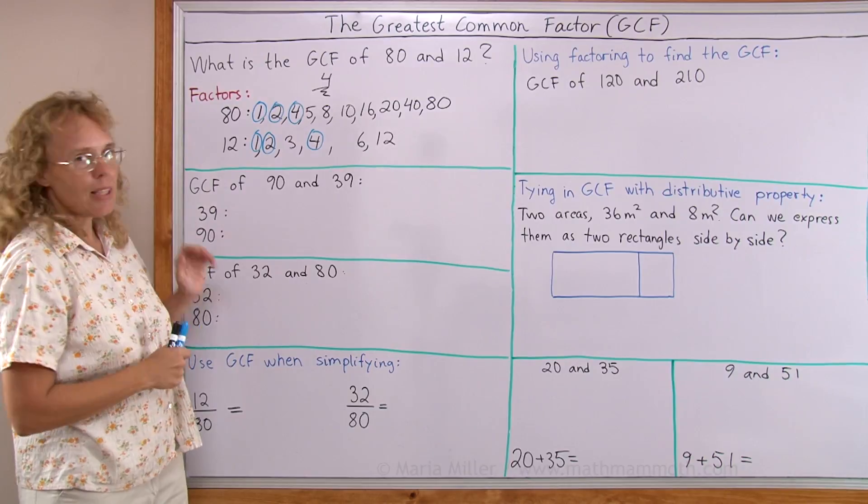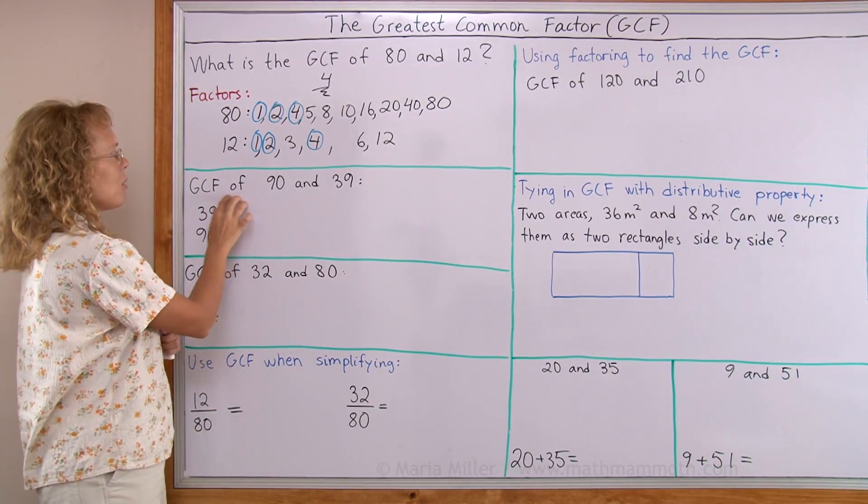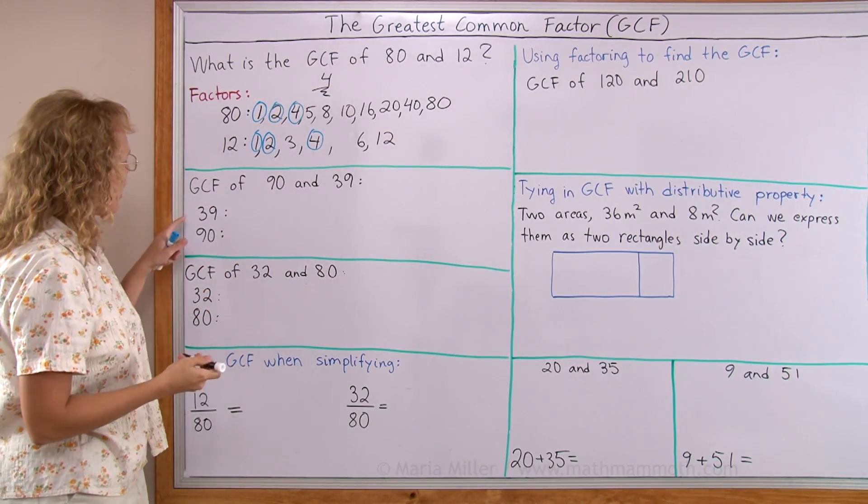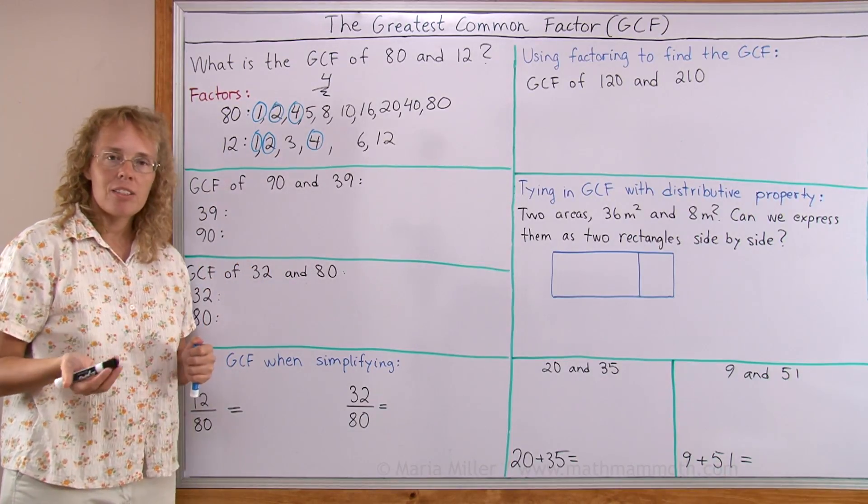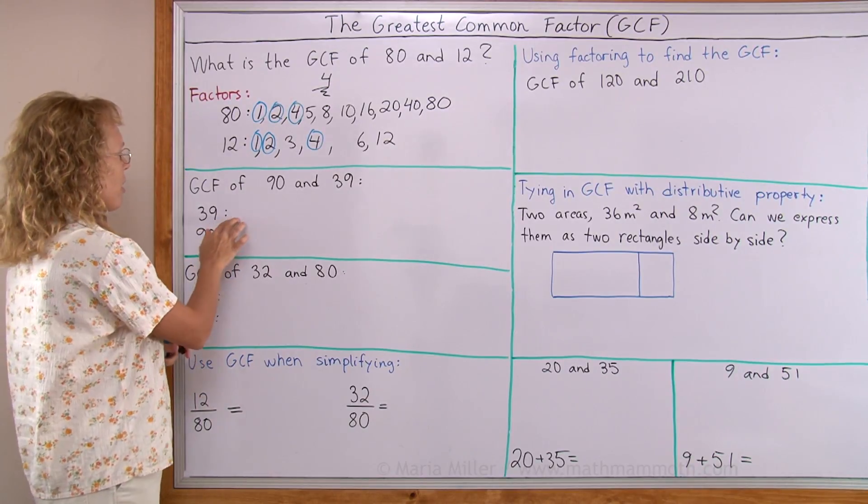That took some time, but sometimes we can speed up this process. So let's, for example, say that I want to find out the GCF of 90 and 39. I'll start first by finding the factors of 39, because it has fewer factors. It has fewer factors than 90.